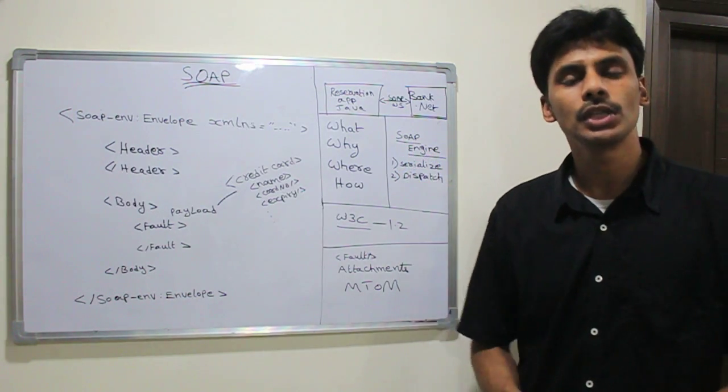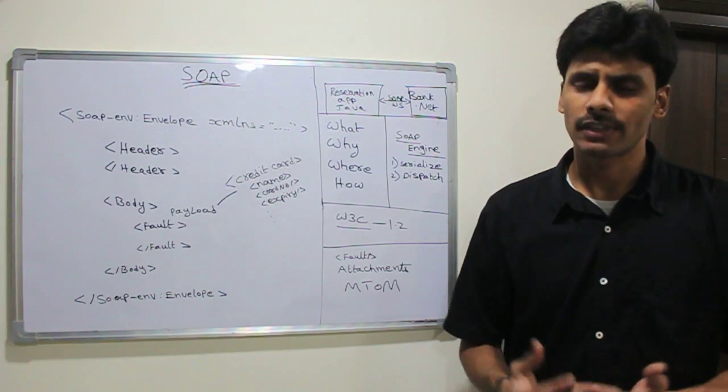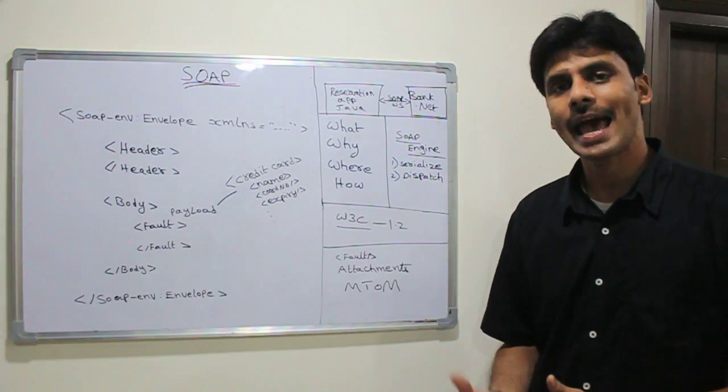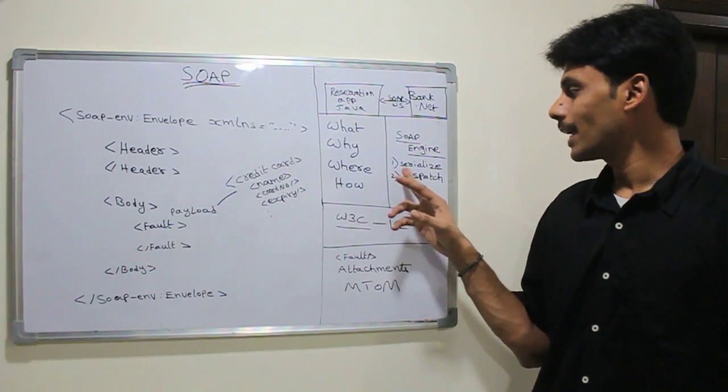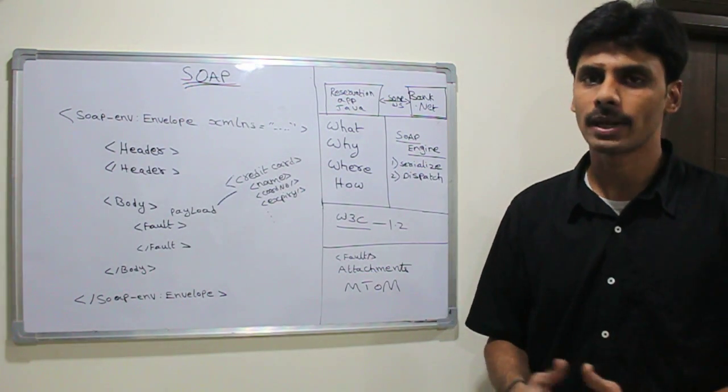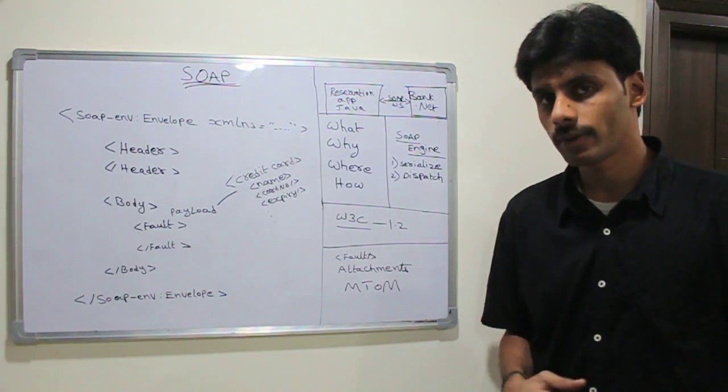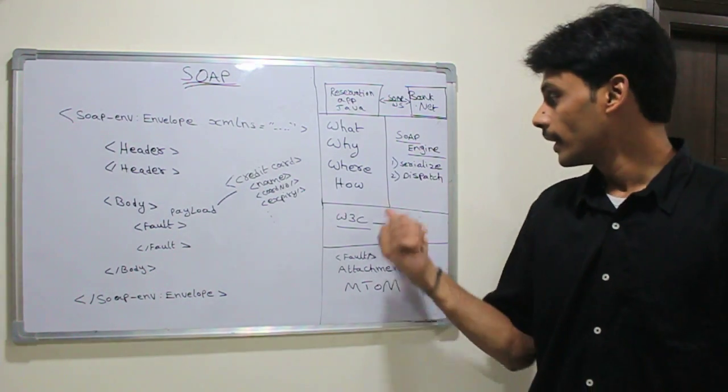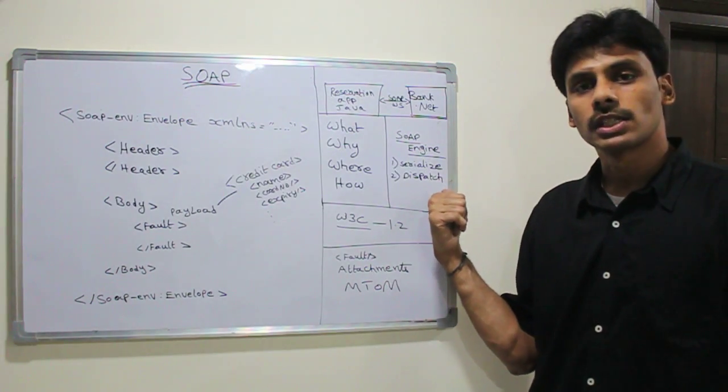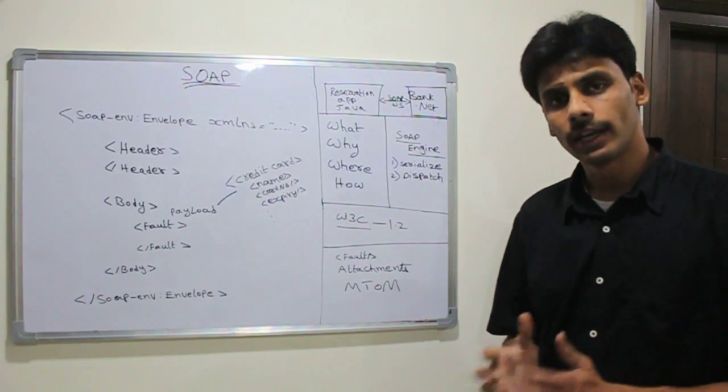We have a SOAP engine embedded into each of these frameworks. The Windows Communication Foundation, the Apache CXF, Apache Axis. All these frameworks have a SOAP engine which can serialize and deserialize the message that comes in into a Java object or a .NET object dynamically at runtime. The second thing these SOAP engines do, if you have watched my web services presentation, you already know that it also dispatches the incoming request to the appropriate method or the appropriate class in your application.